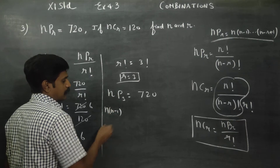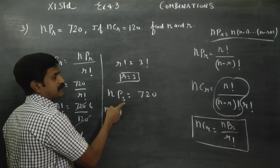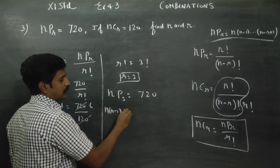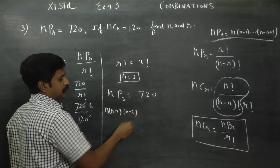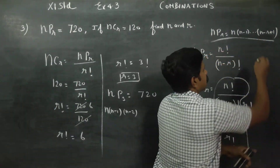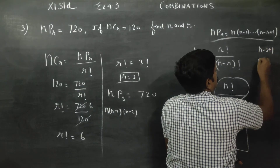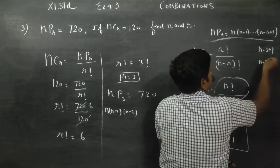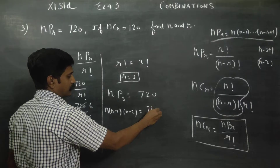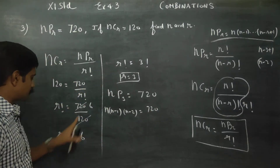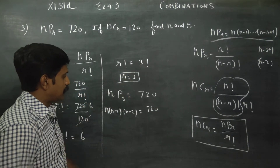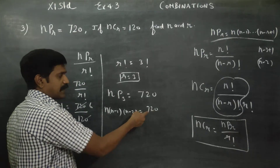So NP3 is N into N minus 1 into N minus 2, which equals 720. Now we need to find three consecutive numbers whose product is 720.